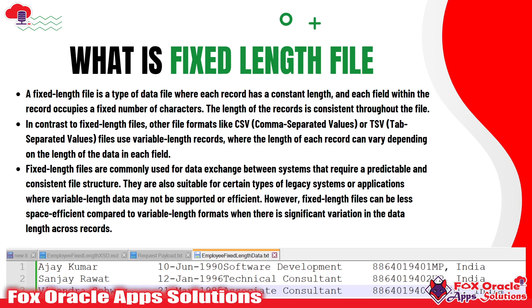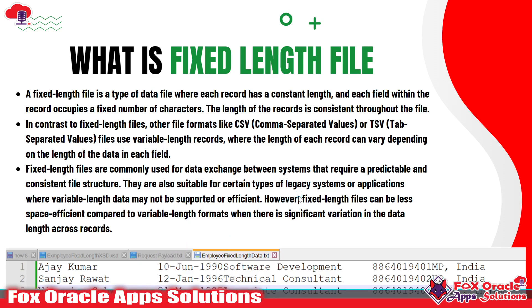A fixed length file is something where the file doesn't have any separated values. The file is separated for each and every column by a fixed length of characters defined. For example, suppose we decided that the first 20 characters will be column 1, the next 10 characters will be column 2, the next 15 characters will be column 3 — that kind of thing is what we call a fixed length file.